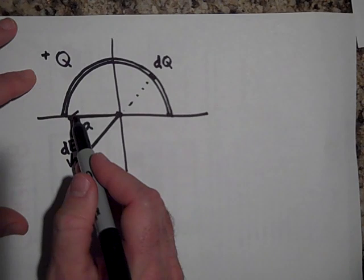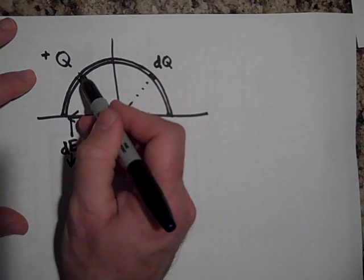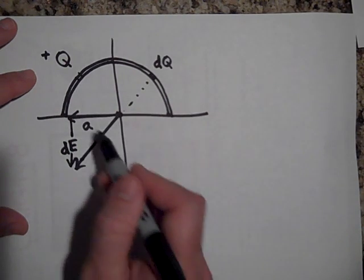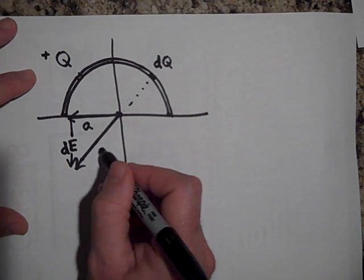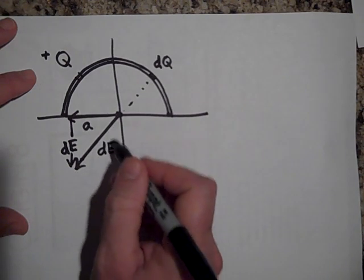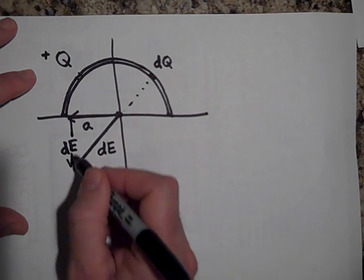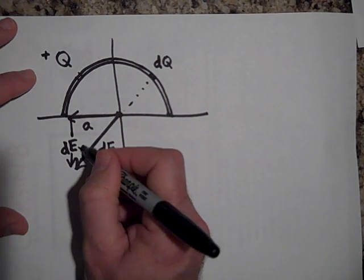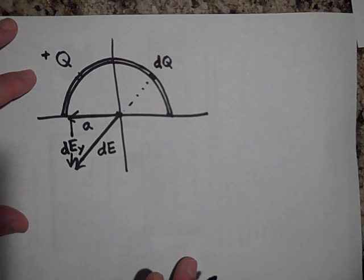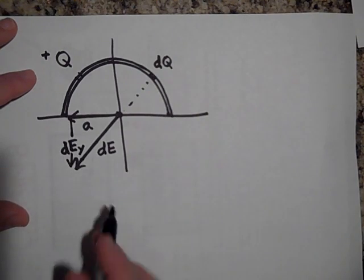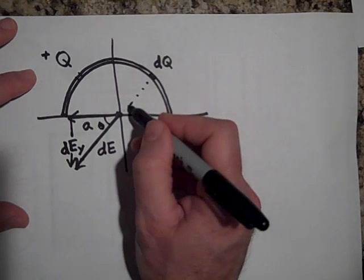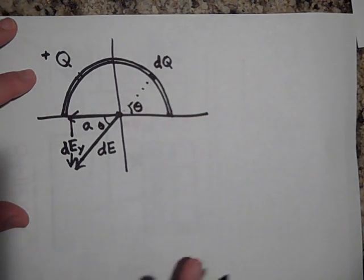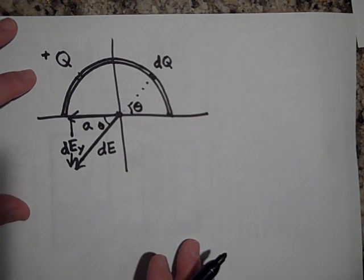And it turns out that if I look at this as an X and a Y component, the X component is going to cancel out with one that's over here going the other way. But the Y's won't. The Y components won't. So let me call this DE. And then let's call this one, this component DE sub Y. The one that's coming straight down. Let's call this theta. But that means that this is theta.